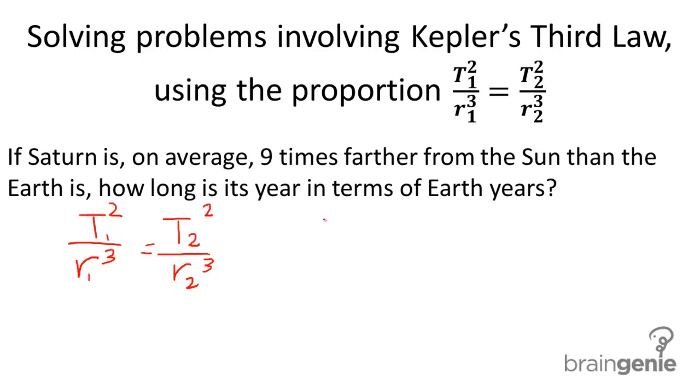Plugging in some dummy variables, since we're trying to find our answer in terms of Earth years, we're going to substitute 1 for T1 and 1 for the radius, because this is saying it's nine times farther from the Sun than the Earth is.